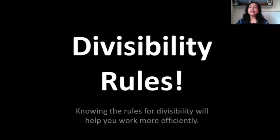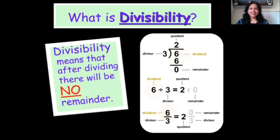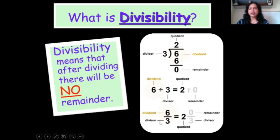Divisibility rules. Now, what does divisibility mean? It means that after dividing, there will be no remainder. You can do division by any method. You can see here 6 is divided by 3, but there is no remainder.